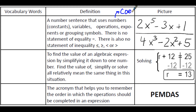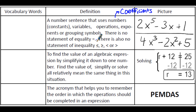I want you to add the word coefficients to this definition. So this first vocabulary is a number sentence that uses numbers, coefficients, or constants, variables, operations, exponents, or grouping symbols. There is no statement of equality. There is also no statement of inequality.